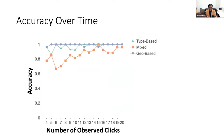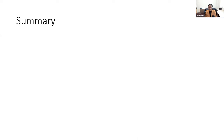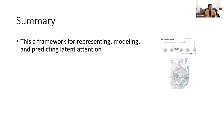We also wanted to see how accuracy changes over time. Plotting number of clicks observed on the x-axis and accuracy on the y-axis, after just four observations the algorithm was able to predict at a fairly high accuracy. To summarize, this is a framework for representing, modeling, and predicting latent attention, and we demonstrate that this can be done fairly accurately. Currently we can only predict really low-level stuff — what someone might click on next — and that's something we're trying to evolve.